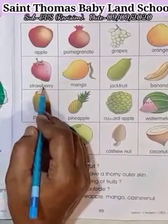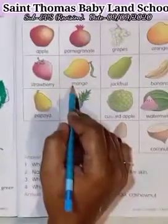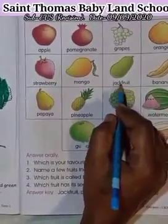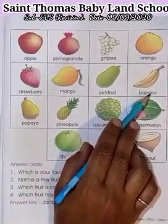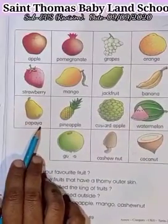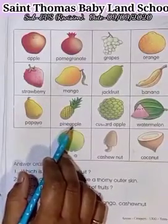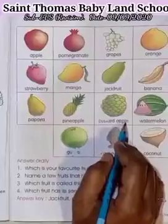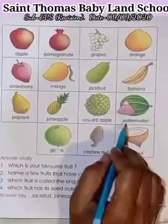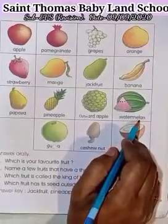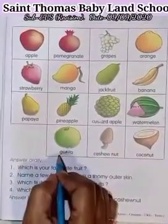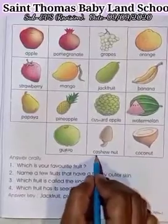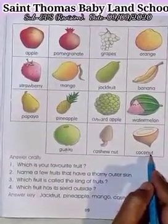Strawberry — S-T-R-A-W-B-E-R-R-Y, strawberry. Mango — M-A-N-G-O, mango. Jackfruit — J-A-C-K-F-R-U-I-T, jackfruit. Banana — B-A-N-A-N-A, banana. Papaya — P-A-P-A-Y-A, papaya. Pineapple — P-I-N-E-A-P-P-L-E, pineapple. Custard apple. Watermelon — W-A-T-E-R-M-E-L-O-N, watermelon. Guava — G-U-A-V-A, guava. Cashew nut — C-A-S-H-E-W-N-U-T, cashew nut. Coconut — C-O-C-O-N-U-T, coconut.